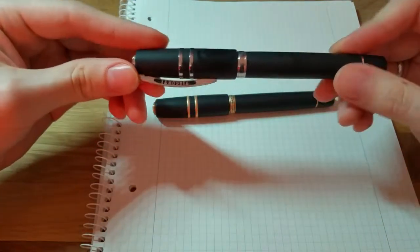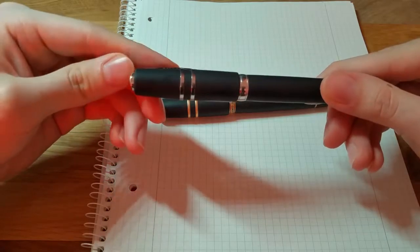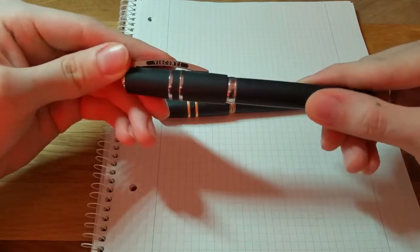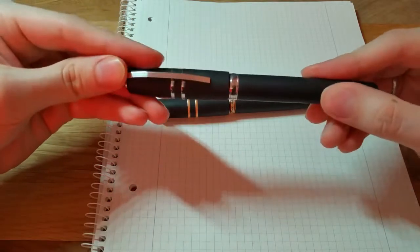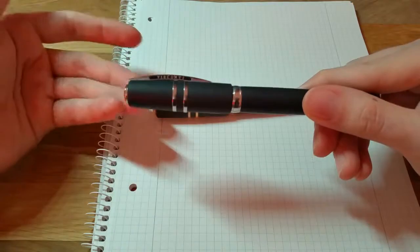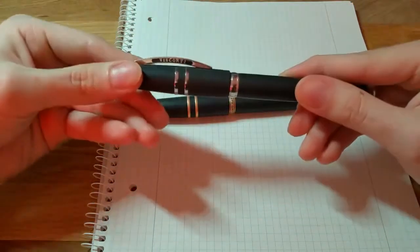So I wrote to Visconti about this and they told me that it's due to the difference in material and they can't machine it that precisely and they have tolerances. And that's the reason you may get a pen that opens easily or you may get a pen that is really hard to open and to close.